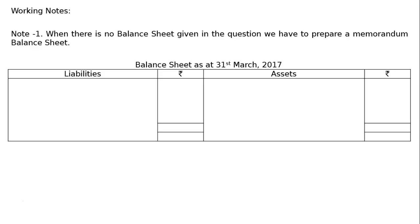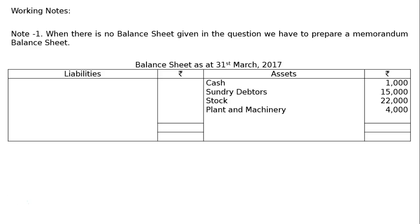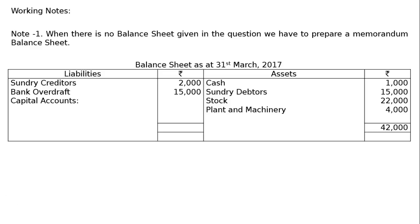The information given to us includes: cash Rs.1,000, sundry debtors Rs.15,000, stock Rs.22,000, plant and machinery Rs.4,000, and total assets Rs.40,000. On the liabilities side: sundry creditors Rs.2,000, bank overdraft Rs.15,000, capital accounts — A Rs.15,000, B Rs.10,000 (total Rs.25,000), and total liabilities Rs.42,000.